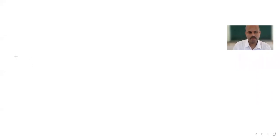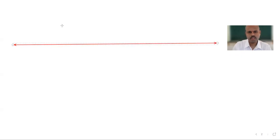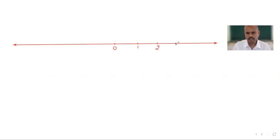First of all, what you need to do is have a number line and mark 0, then mark 1 and 2 at somewhat equal distances. You are going to mark it with the help of a ruler or scale, so make sure that you keep the points at equal distance.